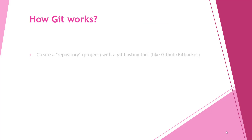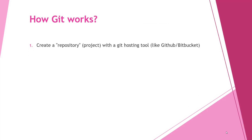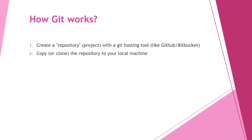How does Git work? First, you create a repository with a Git hosting tool like GitHub or Bitbucket. Here I will use GitHub. Then you copy or clone the repository to your local machine.